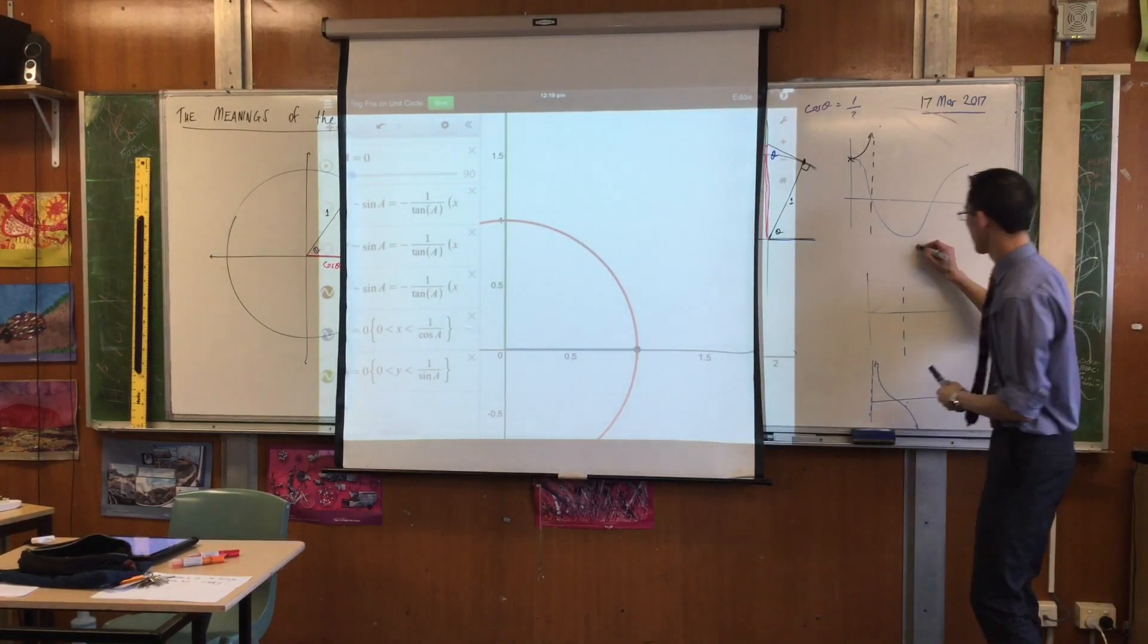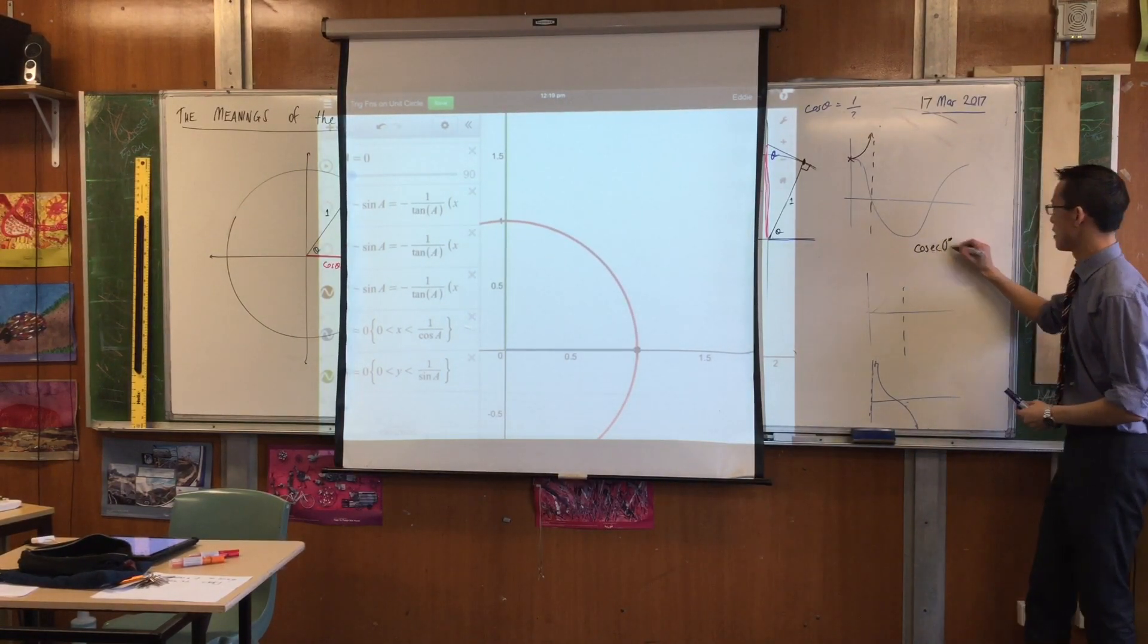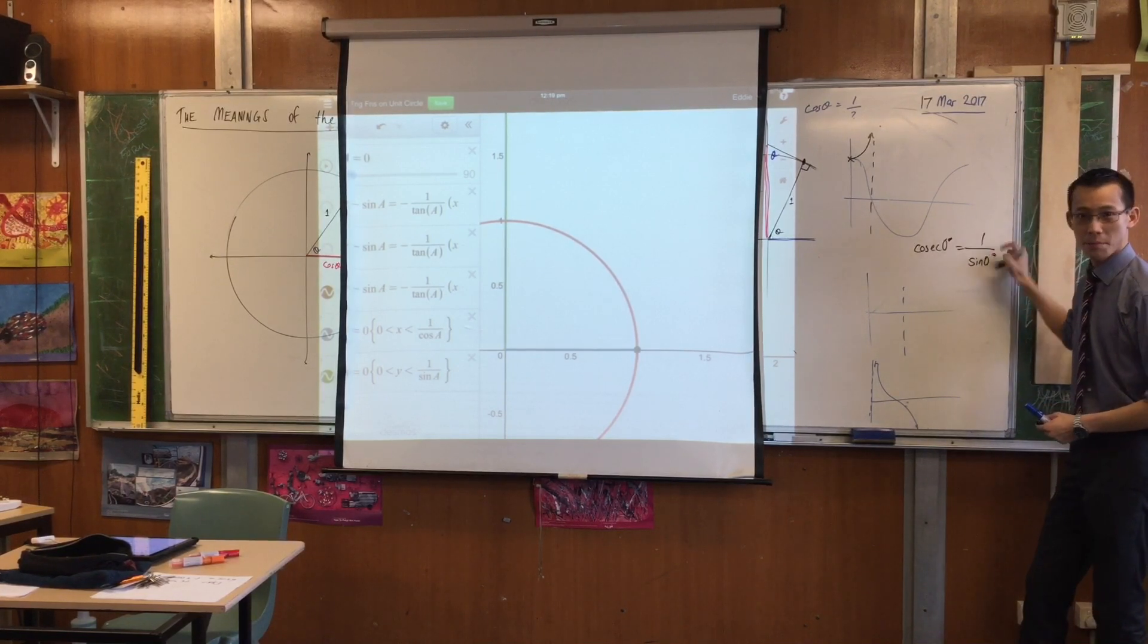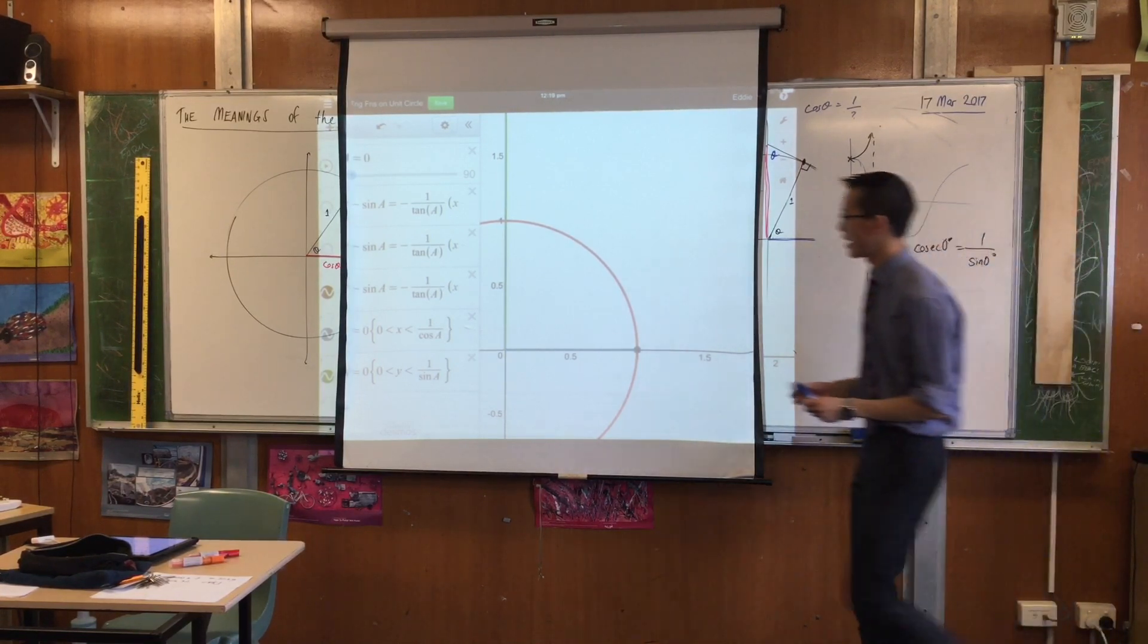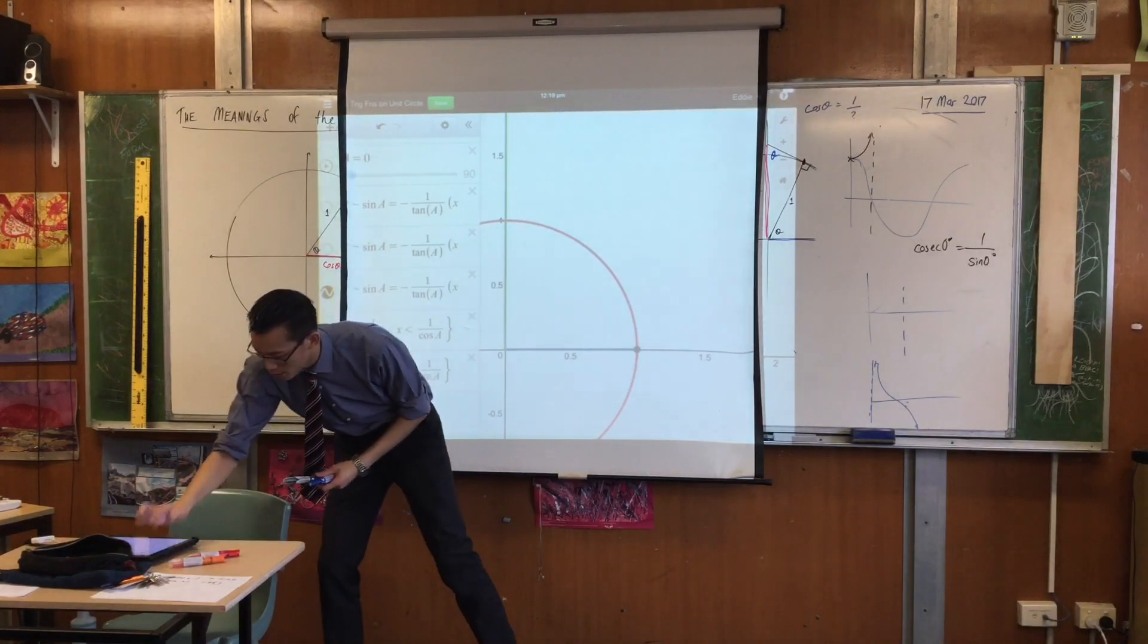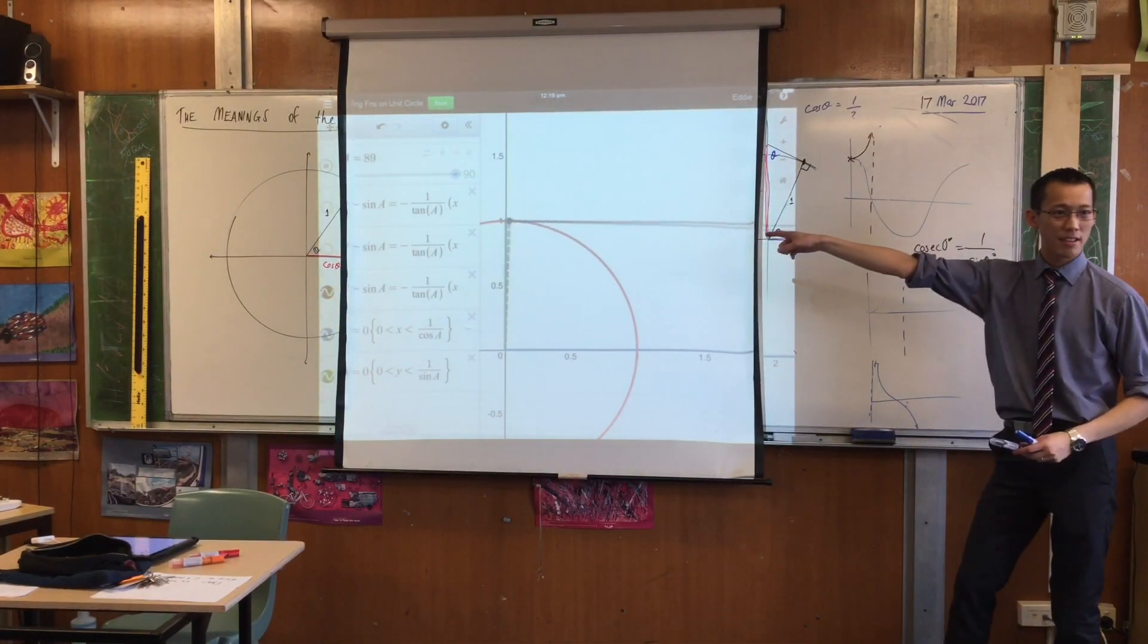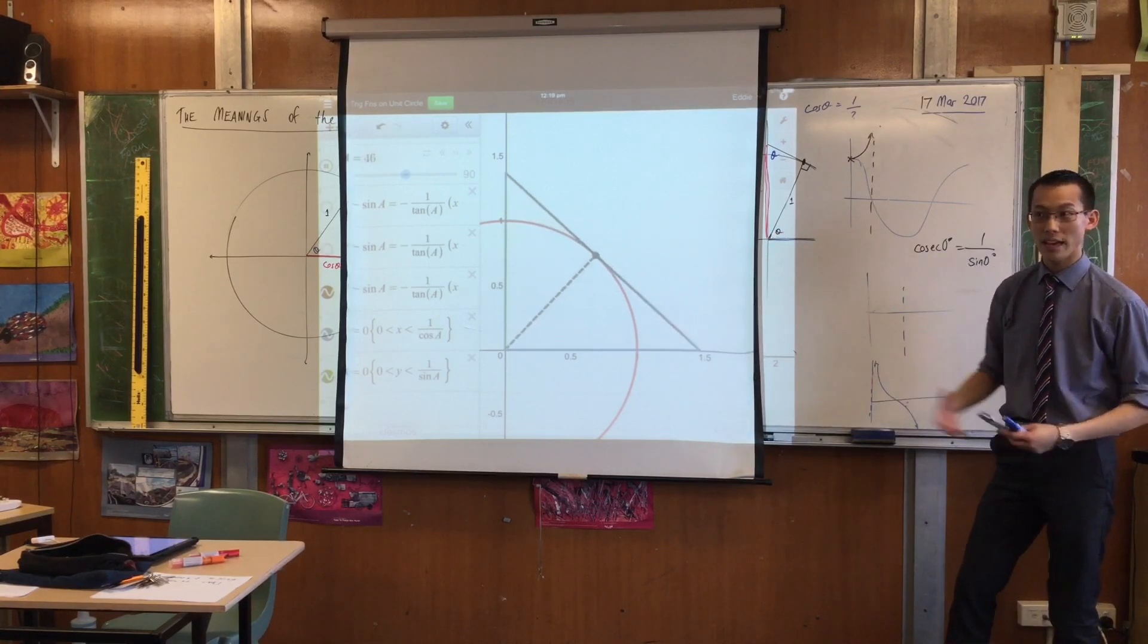Cosec 0 is 1 over sin 0. Isn't it? But that's 1 over 0. It's undefined. But then as soon as you start moving, it starts to come down to 1. Do you see that? Because that's exactly what the cosec graph does.